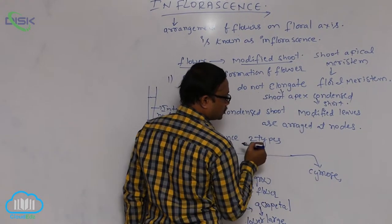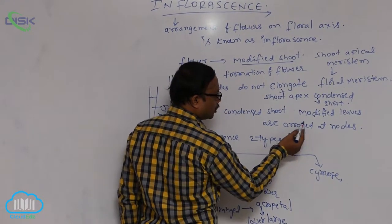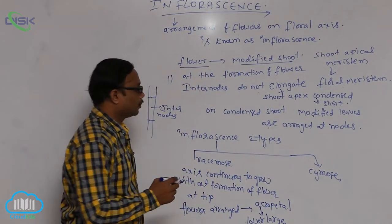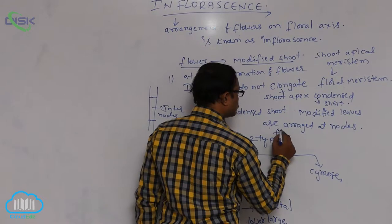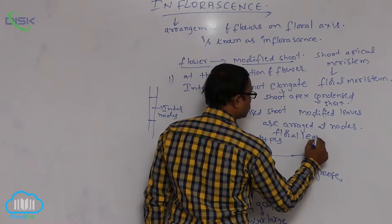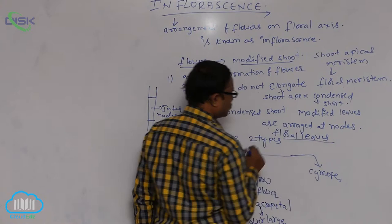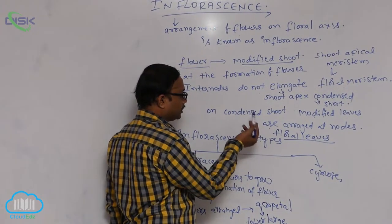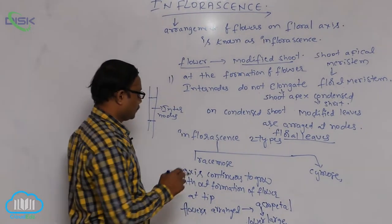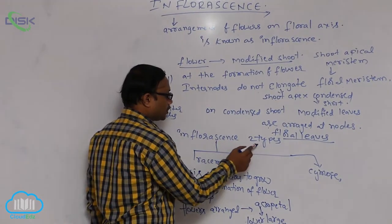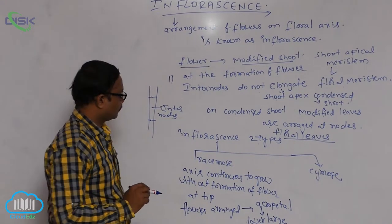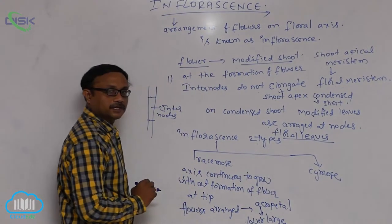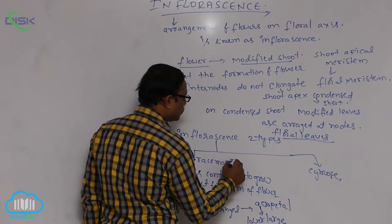Modified leaves — not normal leaves — are arranged at the nodes. These are also known as floral leaves. After these changes occur at the time of flower formation, inflorescence is of two types: racimose and cymose.